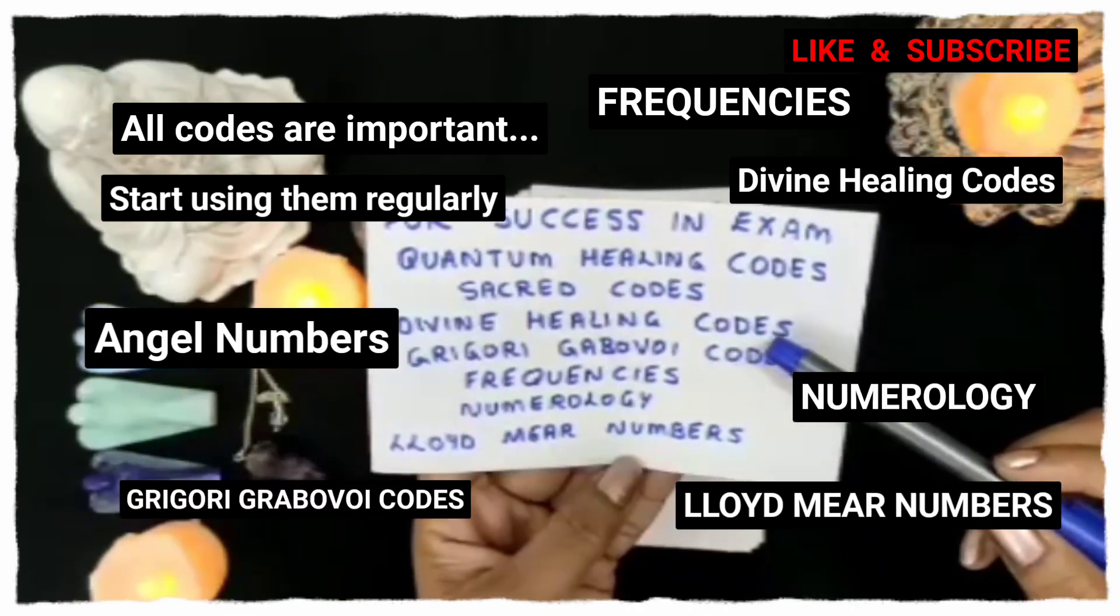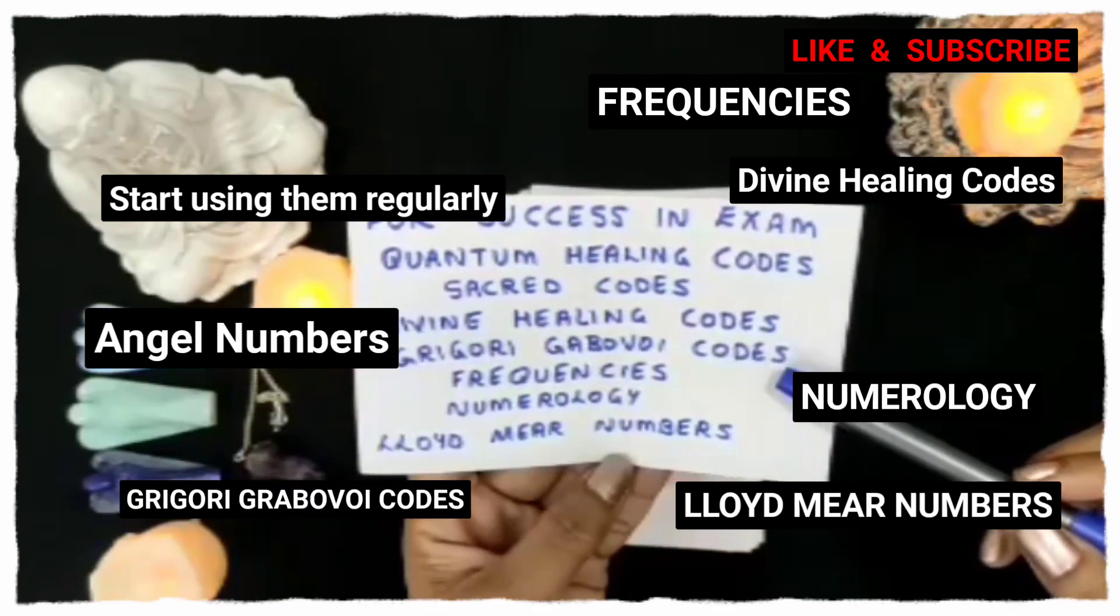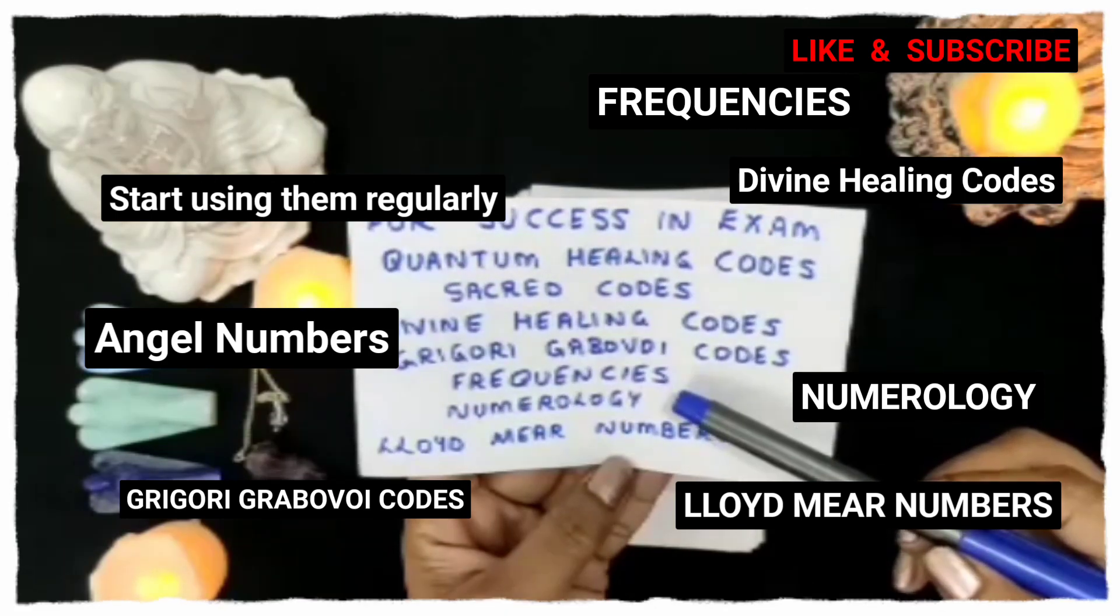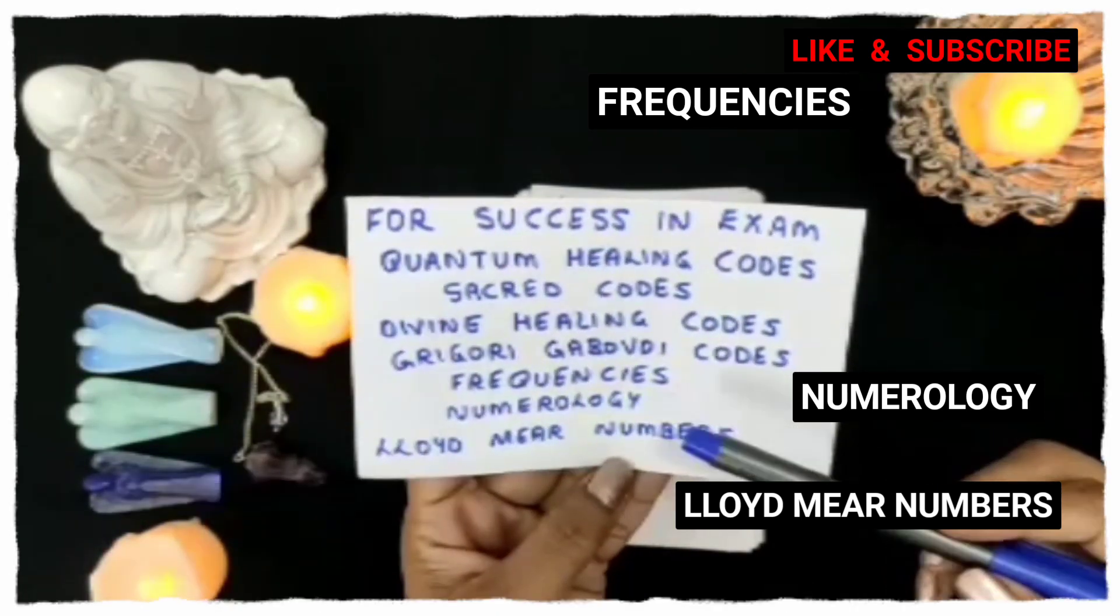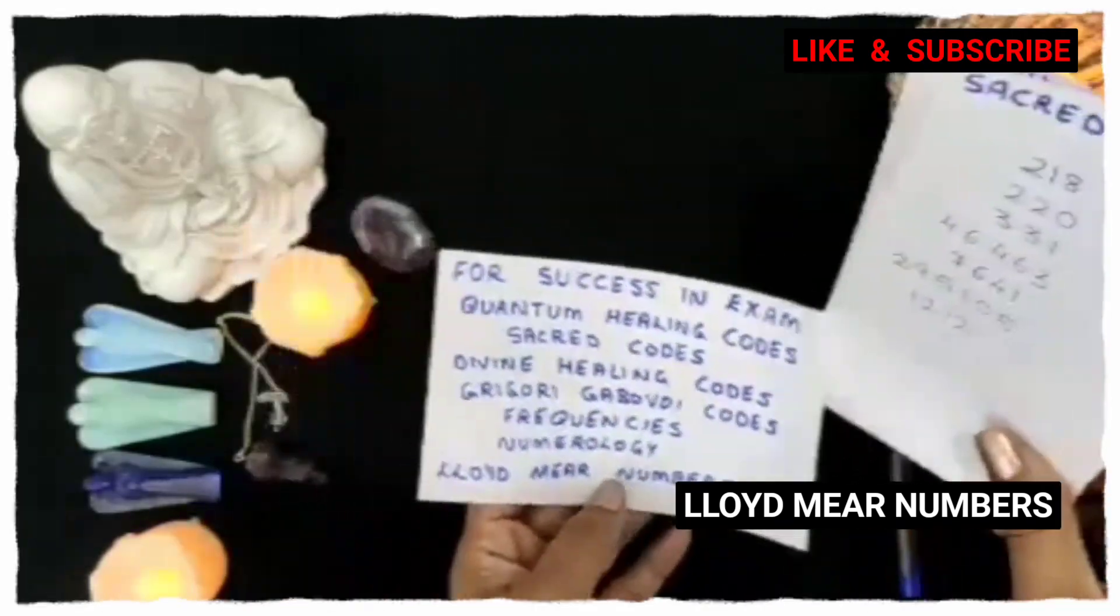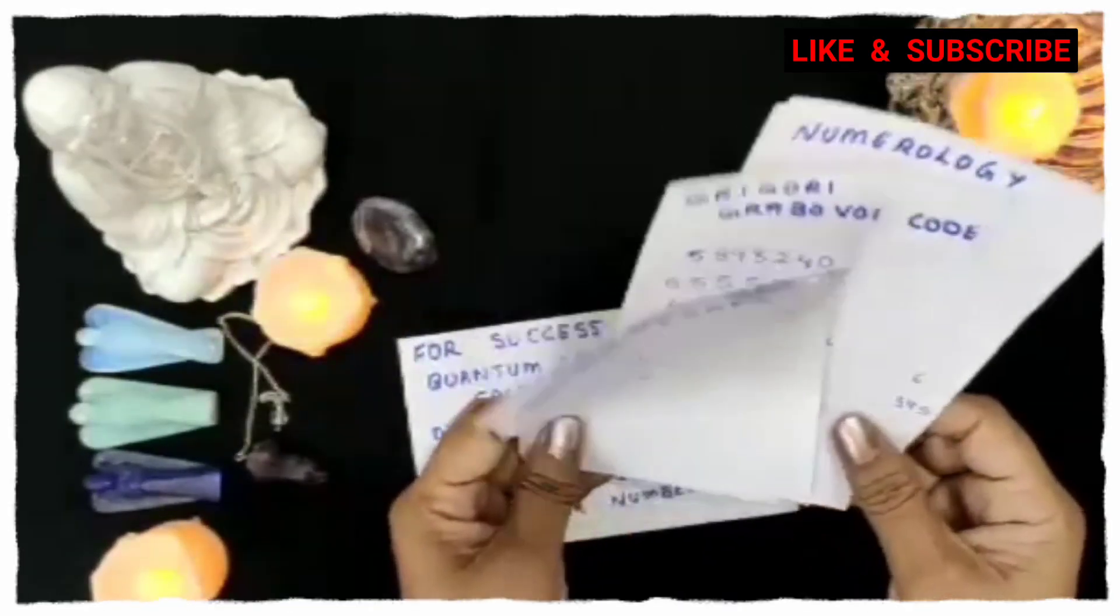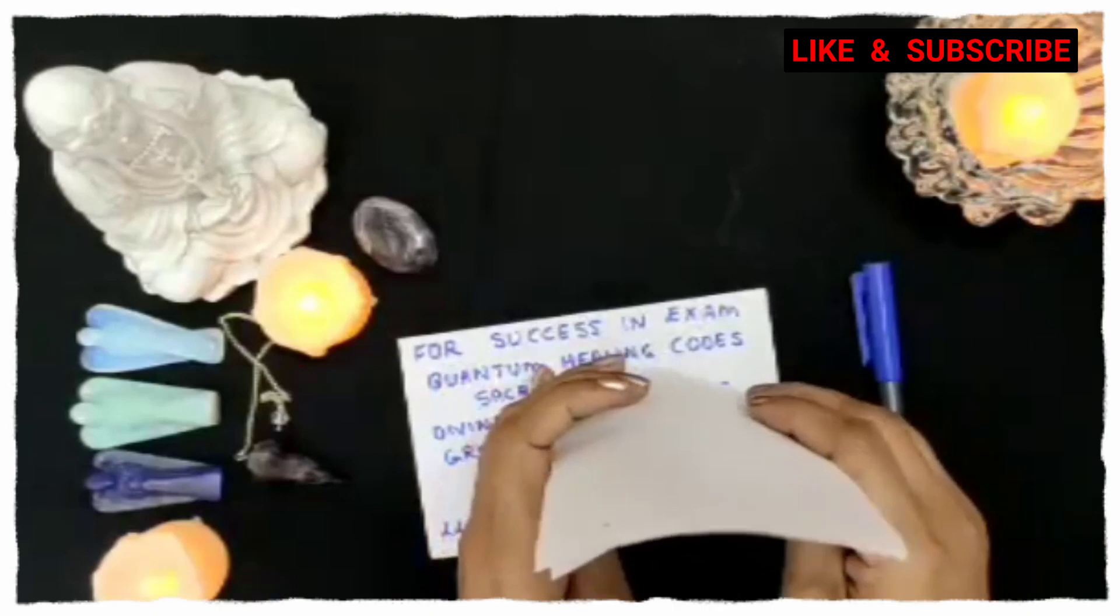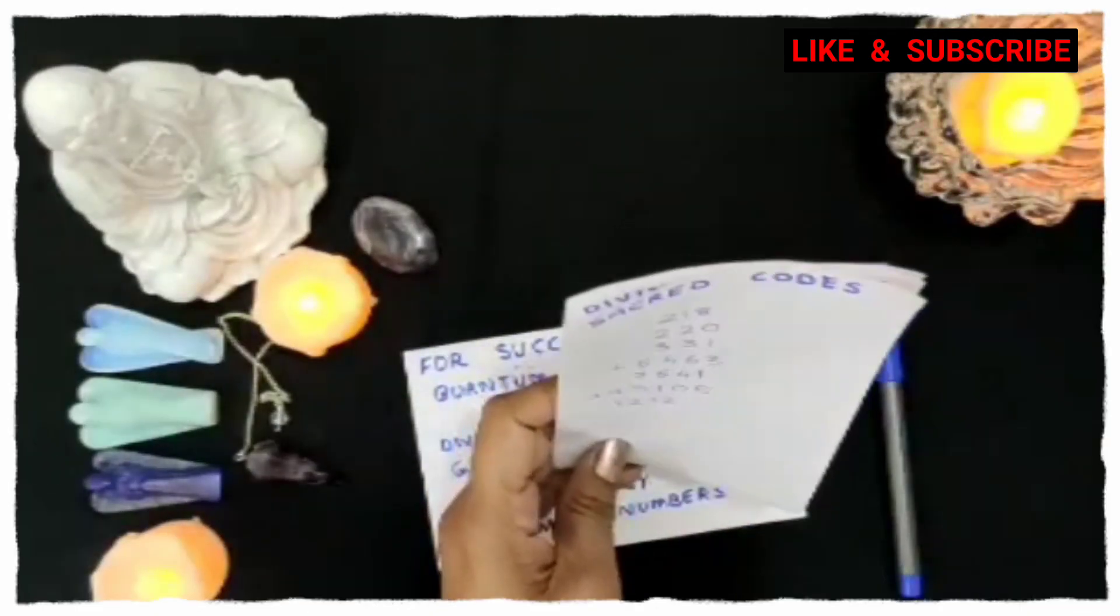These healing codes are sacred codes, divine healing codes, Grigori Graboi codes, frequencies, numerology numbers, and Lloyd Muir numbers. I have brought all these codes and numbers in this one video. I will also share how to use an energy circle and write these codes in it.